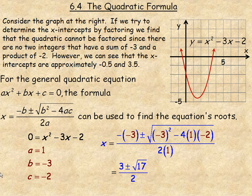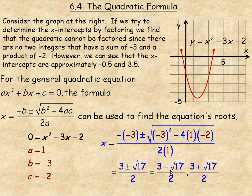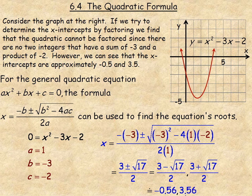To verify that our earlier estimates of negative 0.5 and 3.5 are close, we calculate the decimal approximations: 3 plus the square root of 17 divided by 2, and 3 minus the square root of 17 divided by 2. In the calculator, those give us approximately negative 0.56 and about 3.56, confirming that the graph estimates were pretty close and those are the two x-intercepts.